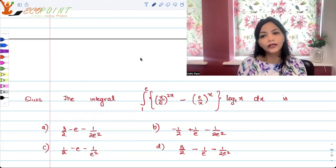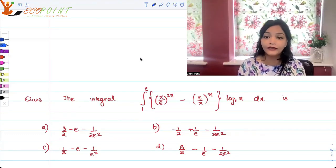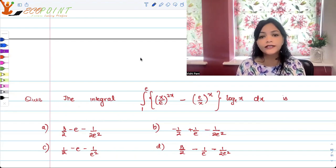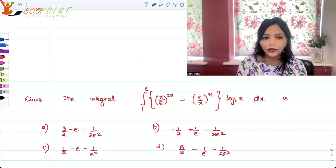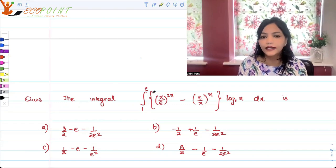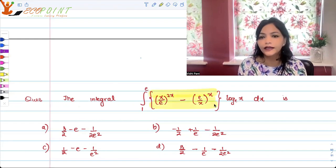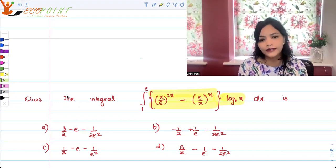Hey guys, welcome to another video, another question. So today I have an integration question for you guys. Let's find the integral from 1 to e of x upon e to the power 2x minus e upon x to the power x, whole thing multiplied by log x dx.